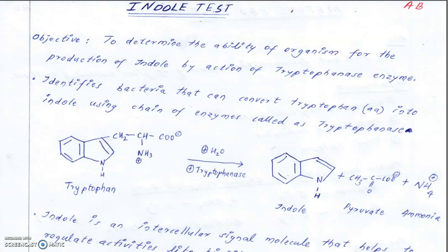We can check them one by one. The first one is the Indole test. The objective of the test is to determine the ability of the organism to produce indole by the action of the tryptophanase enzyme. So we are checking whether the given organism has tryptophanase enzyme or not.